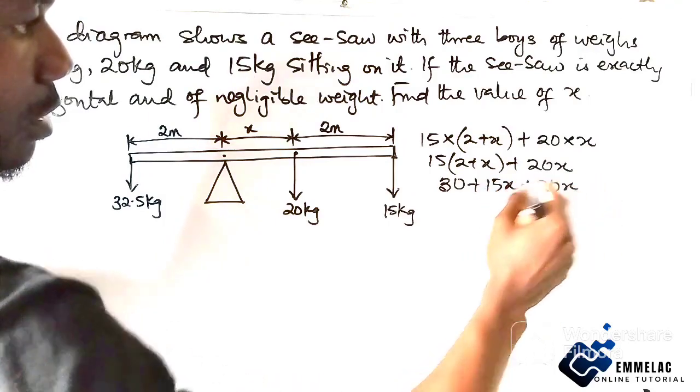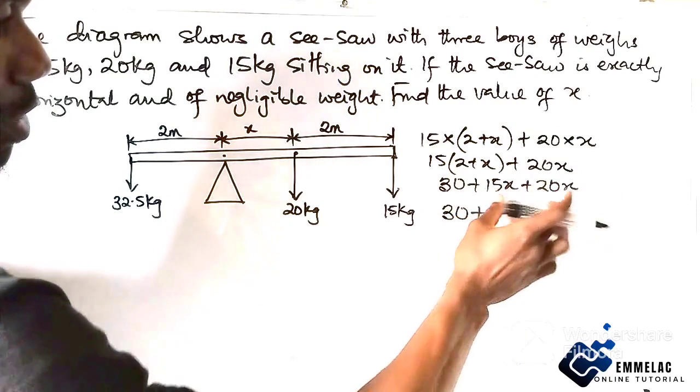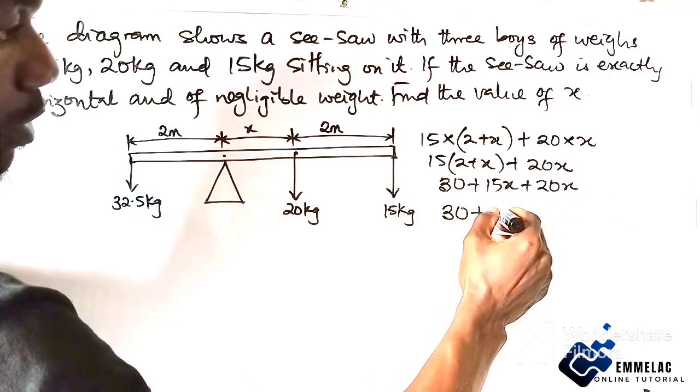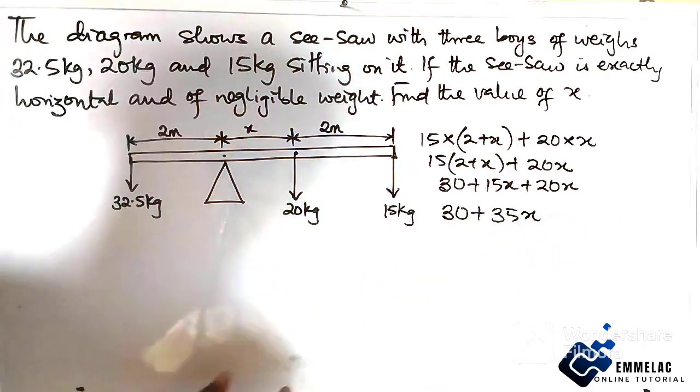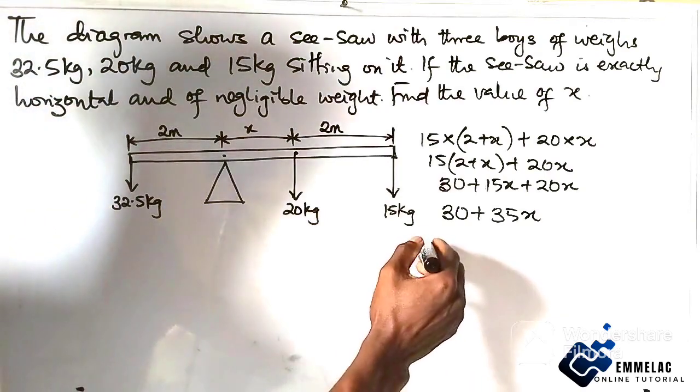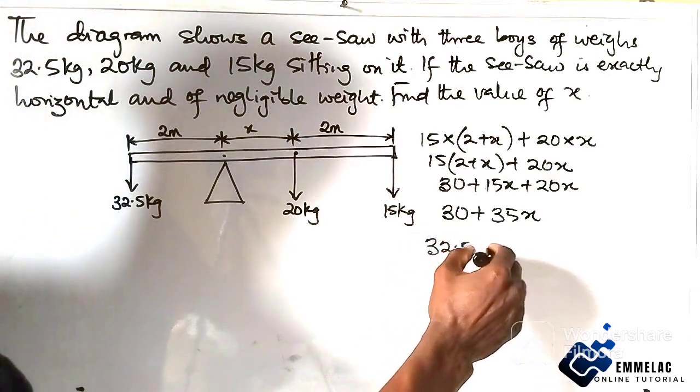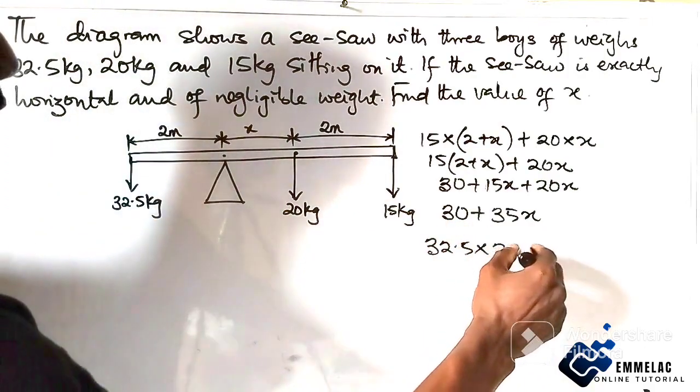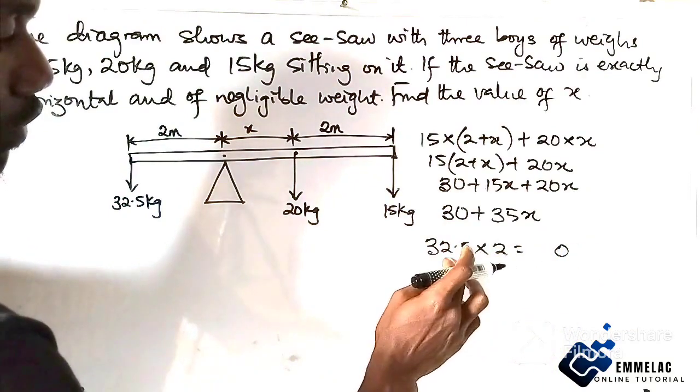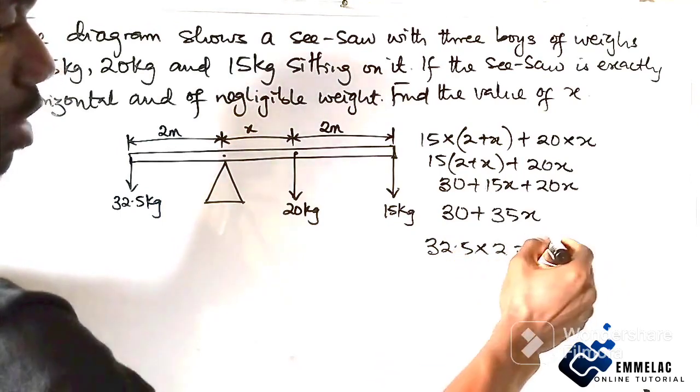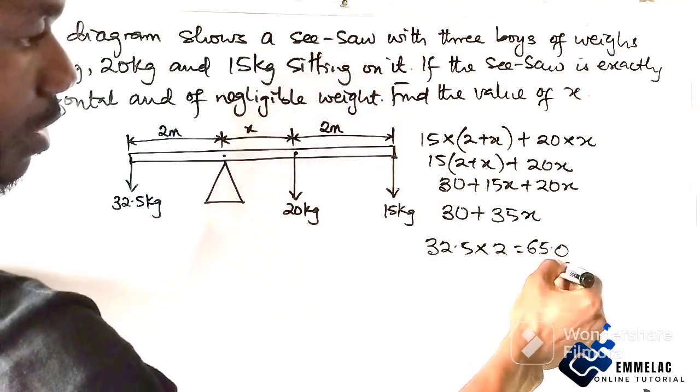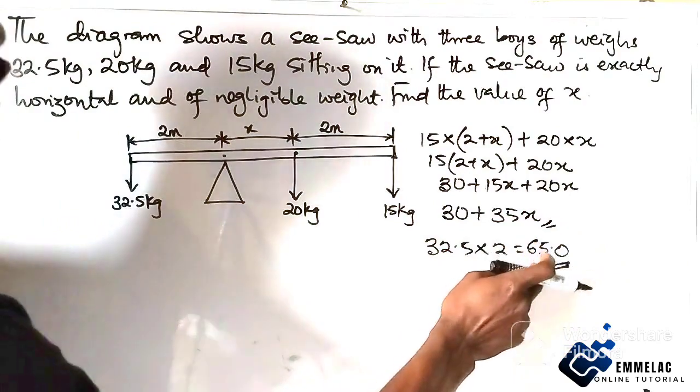Let us now resolve the left-hand side. This one will be 15 into 2 plus x, plus 20x. This will give us 30 plus 15x plus 20x. Since they're having the same x value, we have 35x. For the left-hand side, we have 32.5 times 2, which is 65. This must equal this for us to have a balanced system.